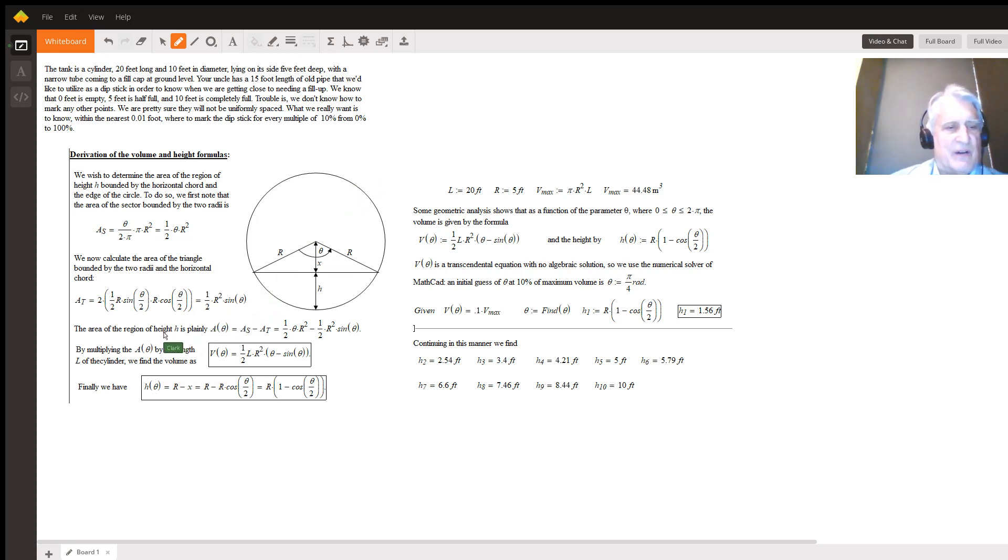So the area at height h is this entire sector minus the area of the triangle, and so we get this. Now this equation is a transcendental equation; there is no exact algebraic solution for it, so we're going to have to solve it ultimately using numerical methods.